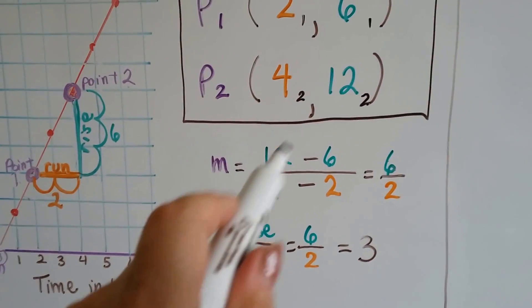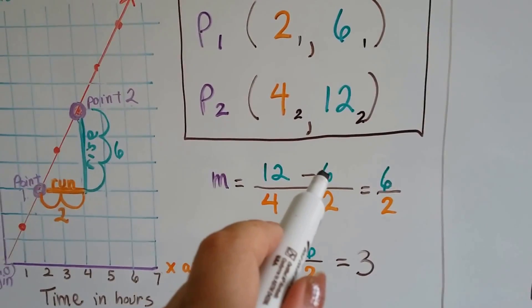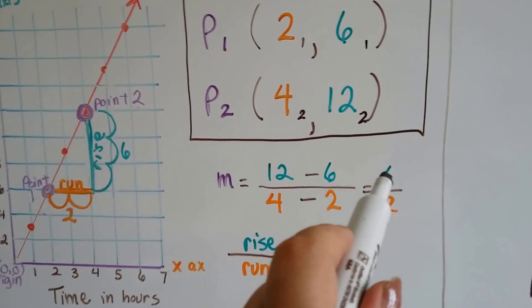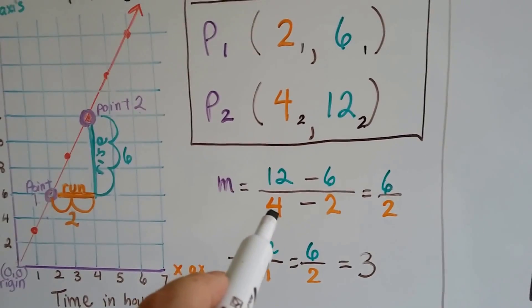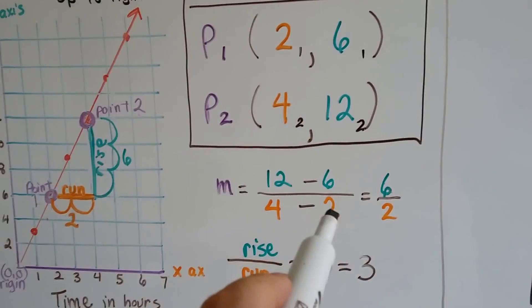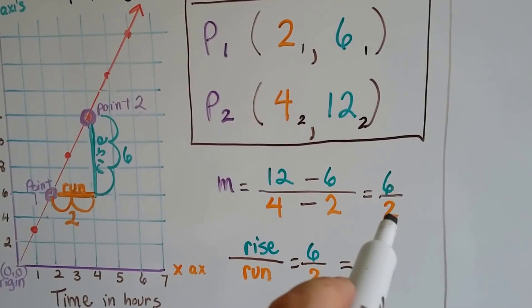So we've got y2, which is 12, take away y1, which is 6. That's going to give us a 6. We've got x2, which is a 4, take away x1, which is a 2. That's a 2.